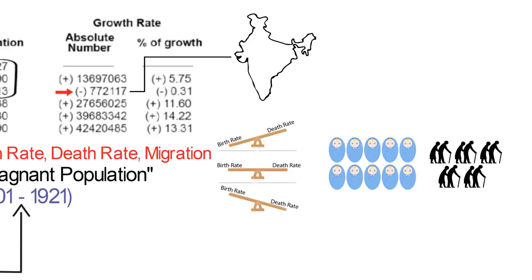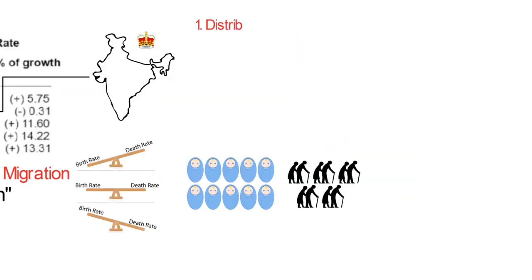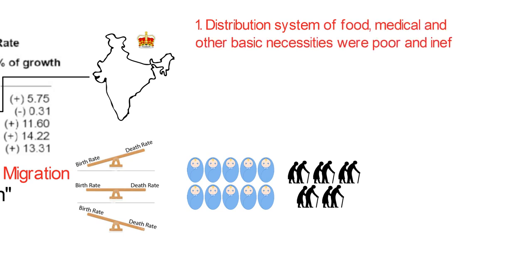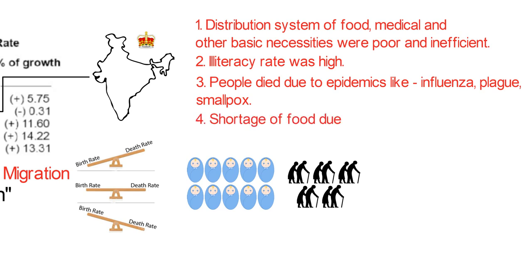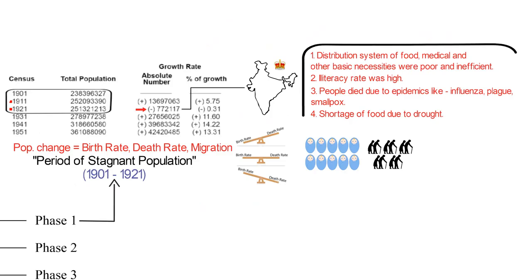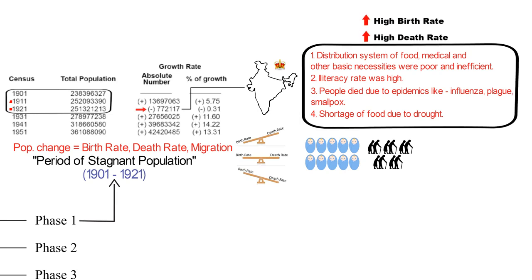At that time, India was under British rule. The distribution system of food, medical and other basic necessities were poor and inefficient. The illiteracy rate was high. People died due to epidemics like influenza, plague, and smallpox. India also faced shortage of food due to drought. So all these factors were responsible for high birth rate as well as high death rate, and that led to the stagnation of the population.